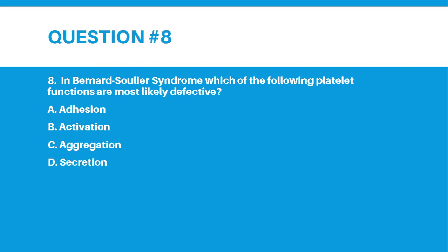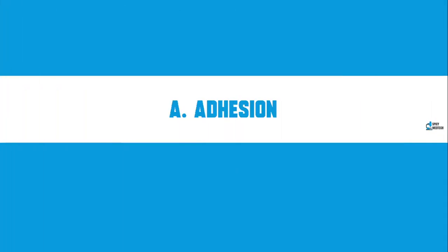Number 8: In Bernard-Soulier Syndrome, which of the following platelet functions are most likely defective? Letter A, Adhesion. Letter B, Activation. Letter C, Aggregation. Letter D, Secretion. The correct answer for number 8 is Letter A, Adhesion.